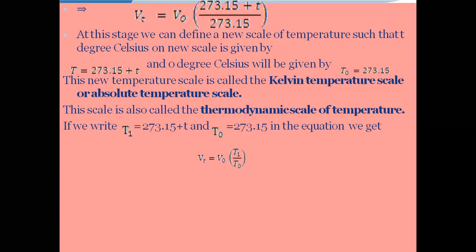Previously, temperature was measured only in degrees Celsius. After this experiment, we came to know there is another scale for measuring temperature — the Kelvin scale, also called the absolute scale or thermodynamic scale. When performing chemical reactions in the laboratory, we use the Kelvin scale. To convert, you simply add 273.15 to the temperature in degrees Celsius to get the temperature in Kelvin.